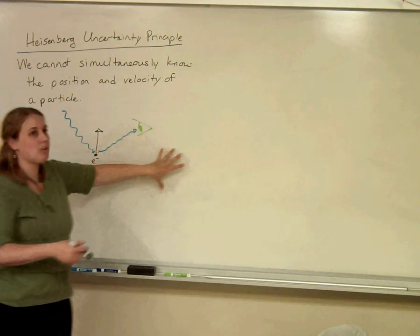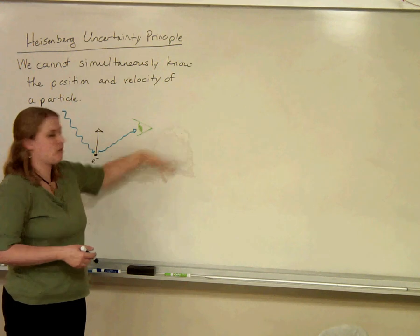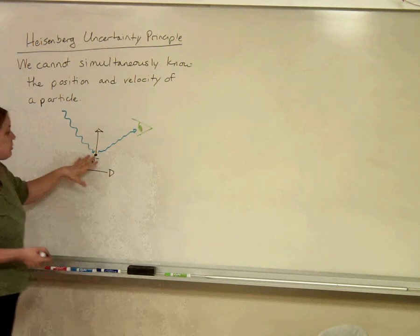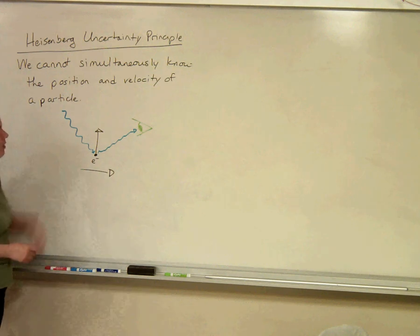But that's because the whiteboard is so big that one little beam of light, one little photon of light, isn't going to affect it. But electrons are so small that a photon of light will affect them, and therefore we can't know both the position and the velocity.